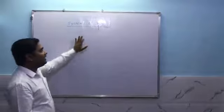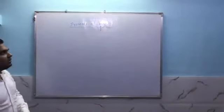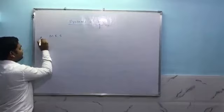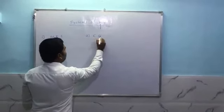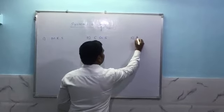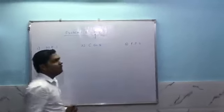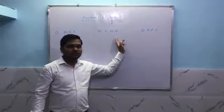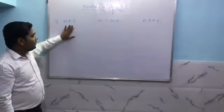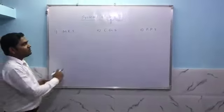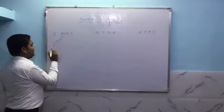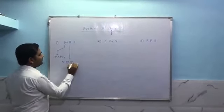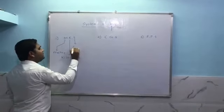Looking at systems, there are 3 types of units: one is MKS, second is CGS, and third is FPS. In MKS — M stands for meter, K stands for kilogram, and S stands for second.